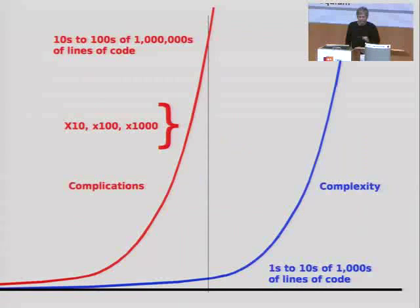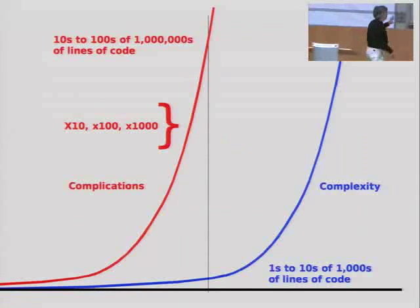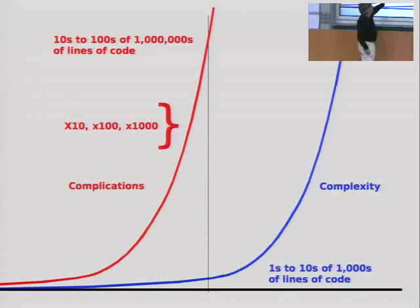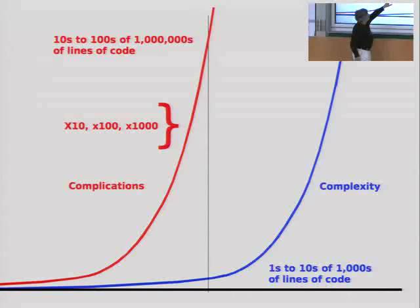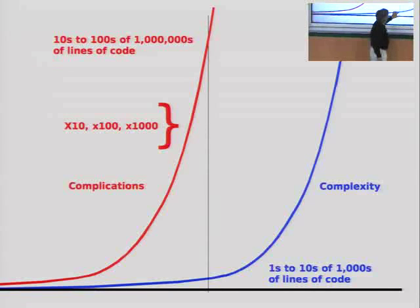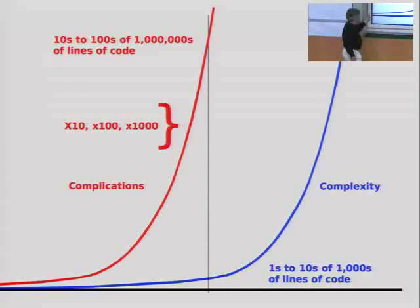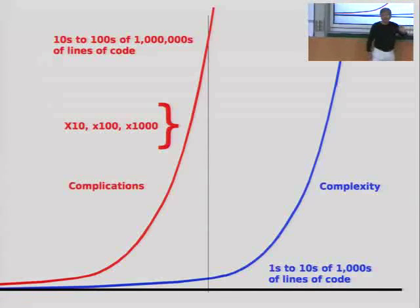One way of looking at it is, here are two curves. The complication curve here, I just put up, about a factor of 100. We could see that while we like the complication curve to run at the same rate as the complexity curve, it actually is way ahead of the game.